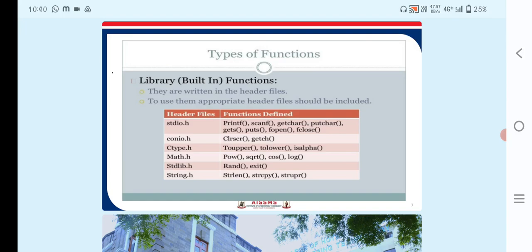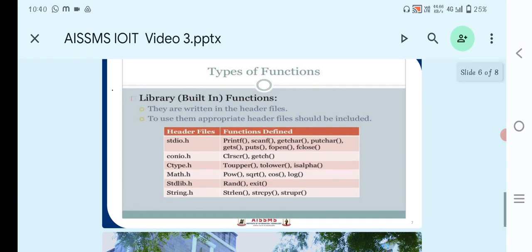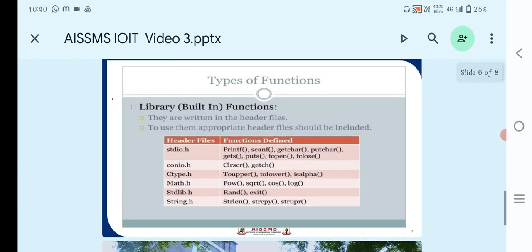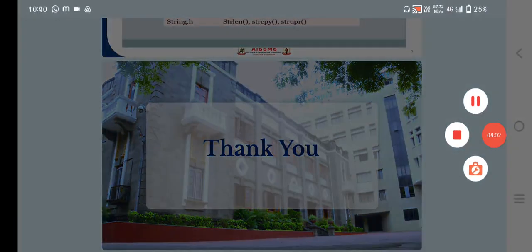Then stdlib.h and string.h are used for functions like strlen, strcpy and strupr. These are the types of functions with the header files and their functions which define how to use those header files and what kind of functions they are defining. Thank you.